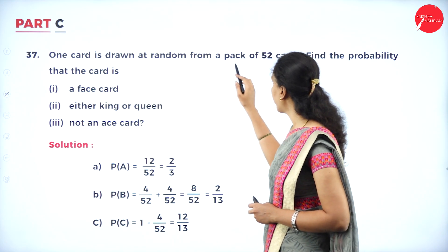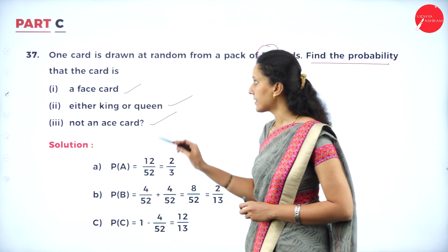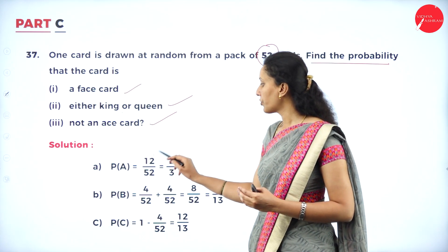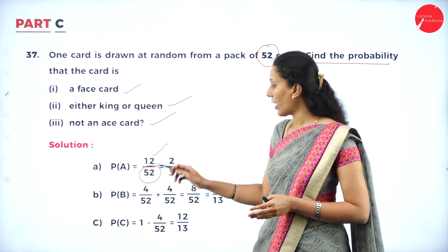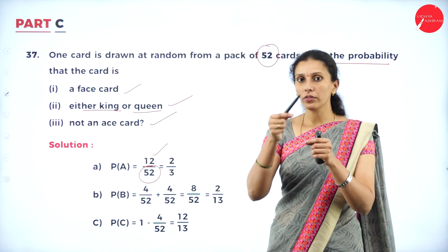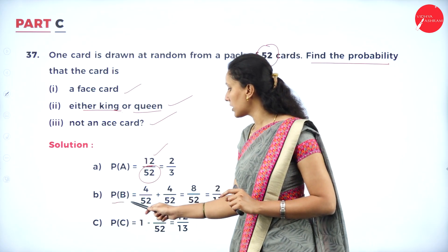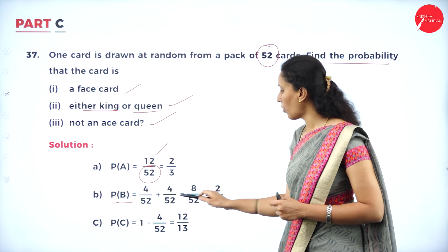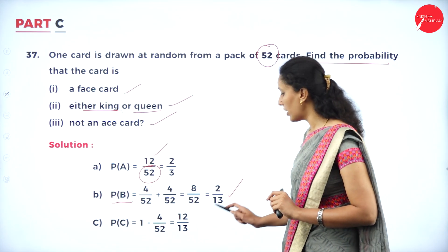One card is drawn at random from a pack of 52 cards. Find the probability that the card is: a face card — face cards are queen, jack and king, giving 12 cards out of 52, so probability is 12/52 = 2/3... wait, that simplifies to 3/13. For either king or queen — since choosing king or queen are mutually exclusive events, probability is 4/52 + 4/52 = 8/52 = 2/13. For not an ace — there are 4 ace cards, so probability of not ace is 1 - 4/52 = 12/13.